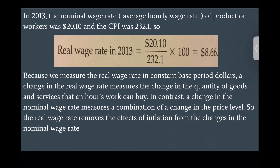In 2013, the nominal wage rate — that is, the average hourly wage rate of production workers — was $20.10 and the CPI was 232.1. So the real wage rate in 2013 equals $20.10 over 232.1 times 100, which equals $8.66. Because we measure the real wage rate in constant base-period dollars, a change in the real wage rate measures a change in the quantity of goods and services that an hour's work can buy. In contrast, a change in the nominal wage rate measures a combination of a change in the price level. So the real wage rate removes the effects of inflation from a change in the nominal wage rate.